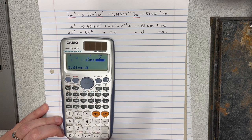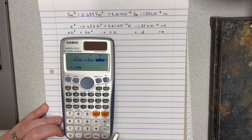c is going to be 3.61 times 10 to the power negative 2, enter, and d is going to be negative 1.55 times 10 to the power negative 3.